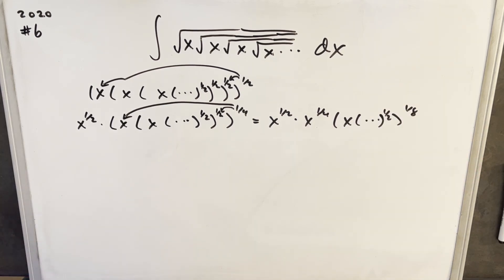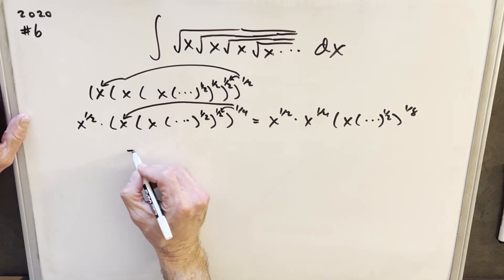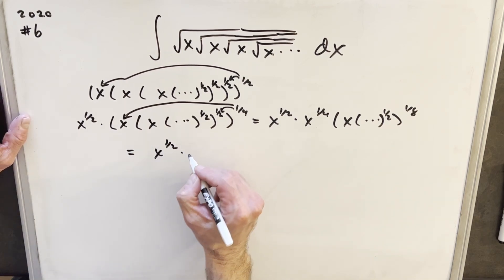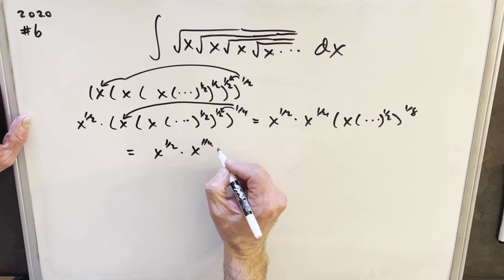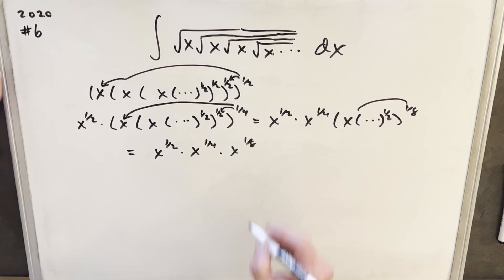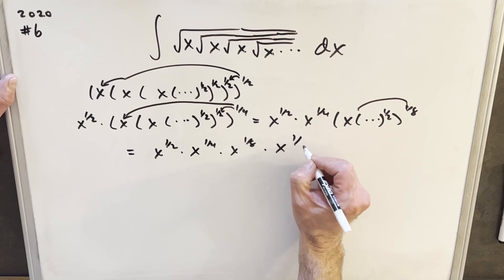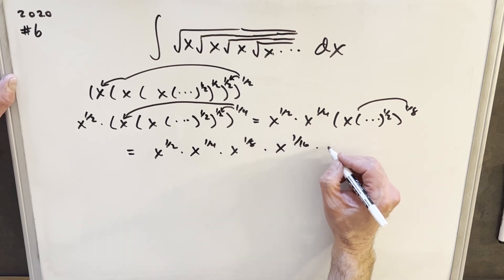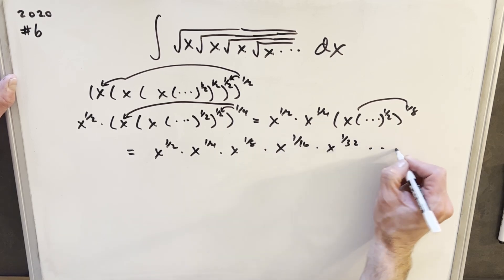And of course, we don't need to do it an infinite number of times, but you can kind of see what's happening. When we do it again, we're going to have X to the one half times X to the one fourth times distributing this in here, we're going to have an X to the one eighth. And then we'll get X to the one over 16. And it's just going to go on and on like that.